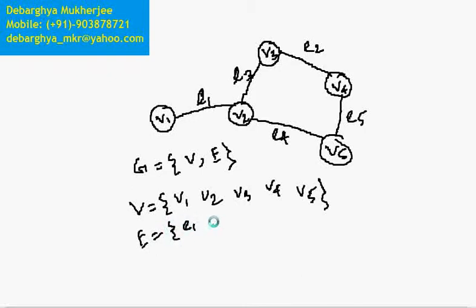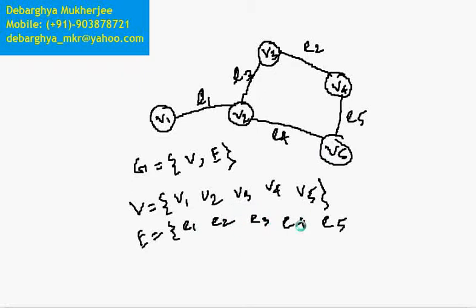The set E contains the edges between those vertices — for example, edges like V1-V2, V2-V3, V3-V4, V4-V5, and so on. So any graph is made of some vertices and some edges.